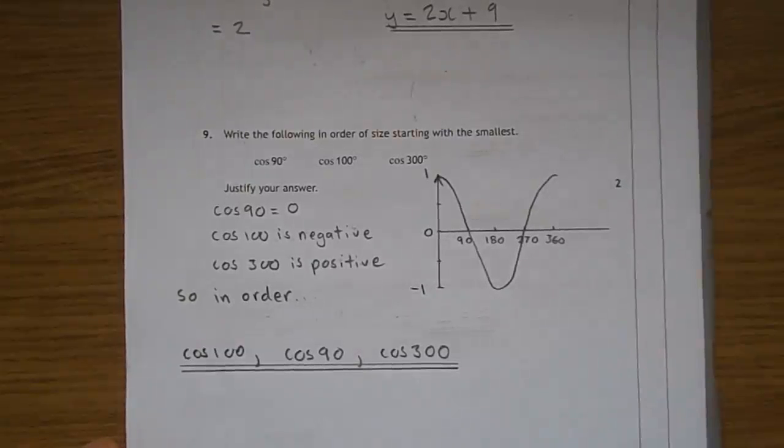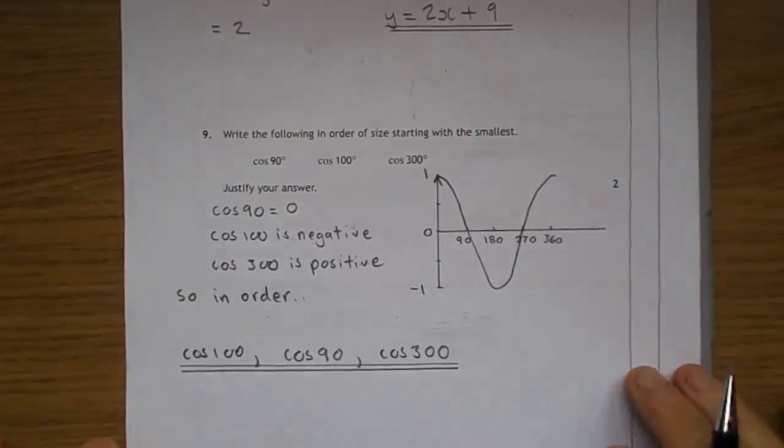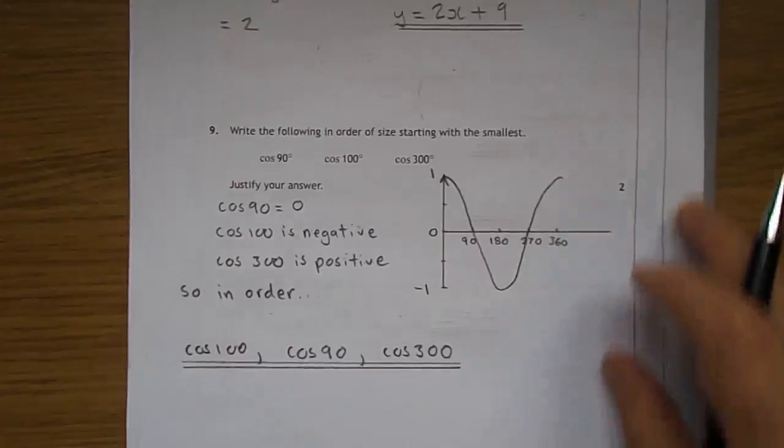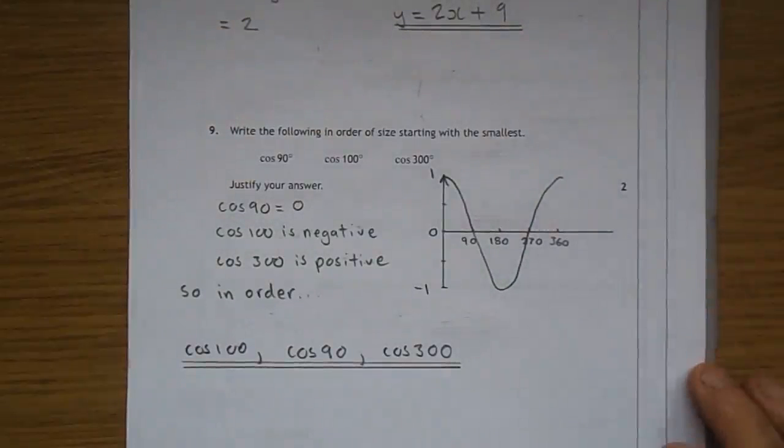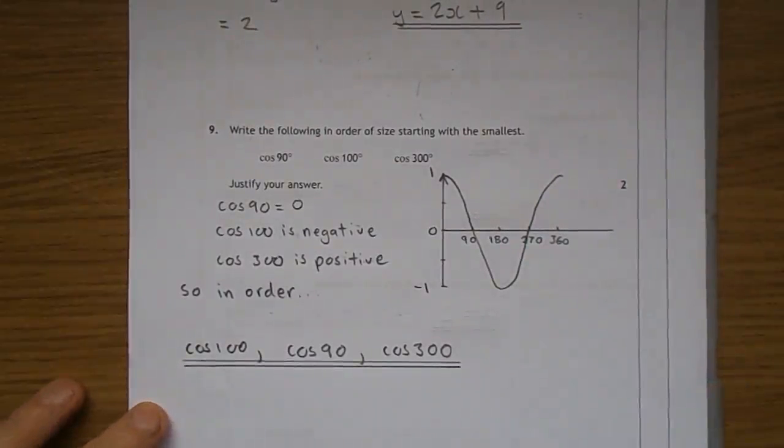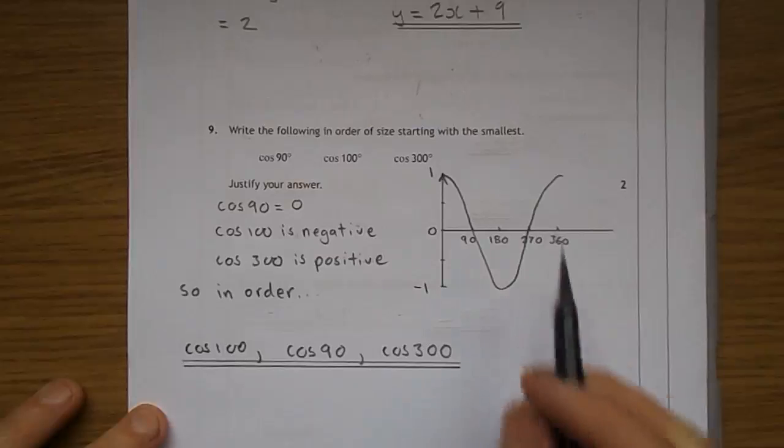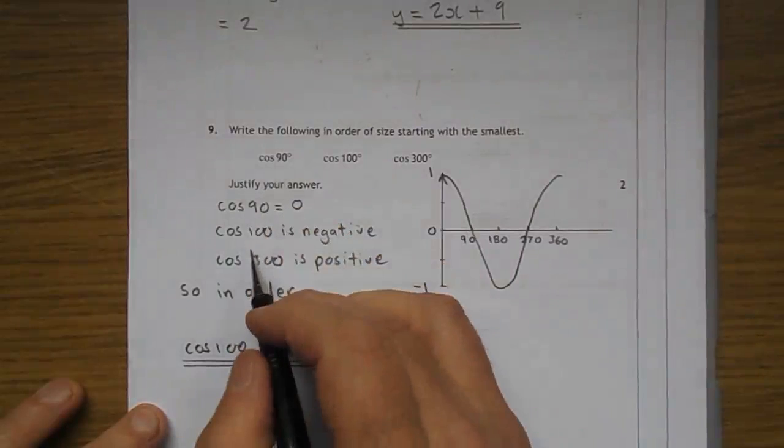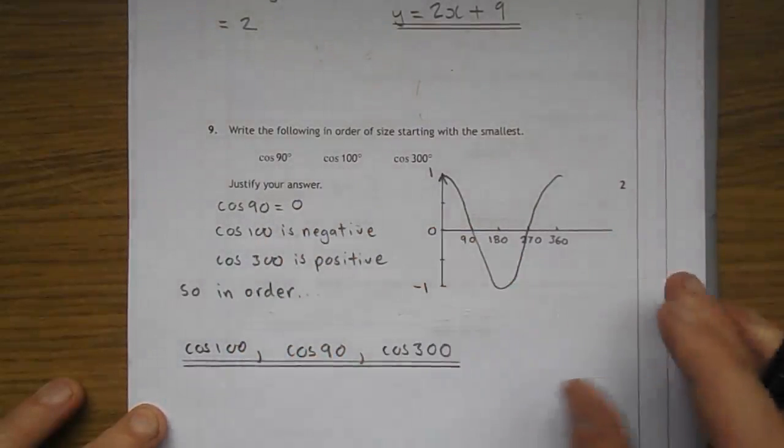Hello again, Roddy Lees here and we're just going to continue with this year's, the 2015 National 5 Mathematics Paper 1. Question 9: write the following in order of size starting with the smallest. You're given three values: cosine of 90, cosine of 100, cosine of 300.